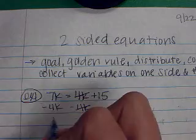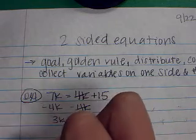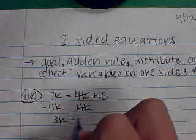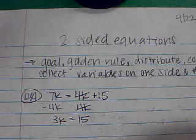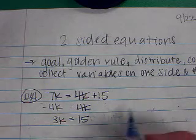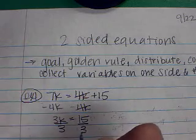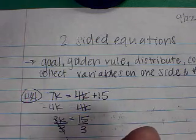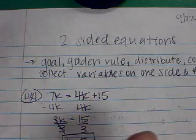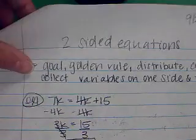Now, 7k minus 4k makes 3k. And on the other side, all that I have left over is 15. Now I have 3k equals 15. I know that when two things are being multiplied, the way to get rid of it is to divide. So I divide both sides by 3, and k equals 5.